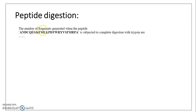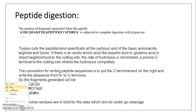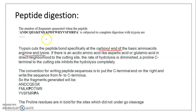Next question: what is the number of fragments generated when a peptide is subjected to complete digestion with trypsin? We know trypsin cuts the peptide bond specifically at the carboxyl end of the basic amino acids lysine and arginine. You must remember that if proline is present at the C-terminal side of the cutting site, it inhibits hydrolysis of the polypeptide completely.